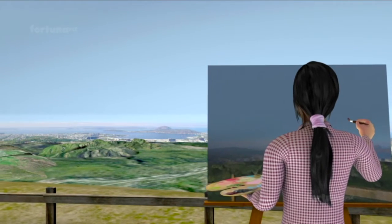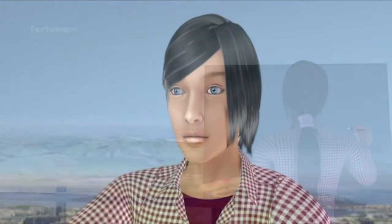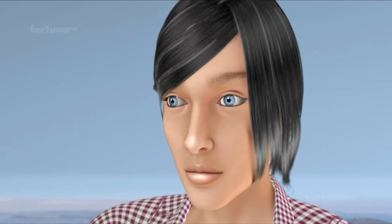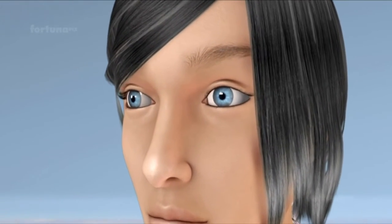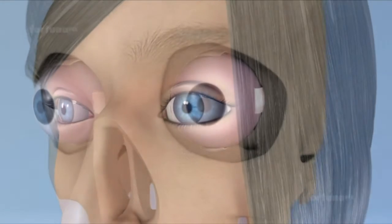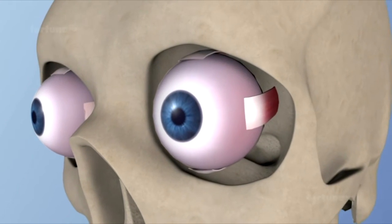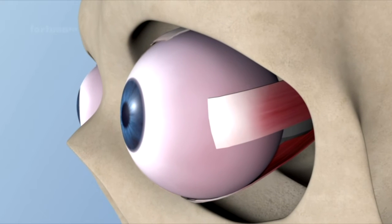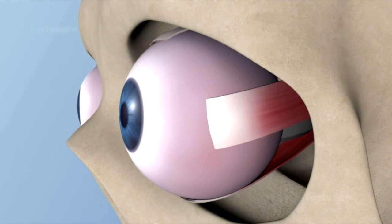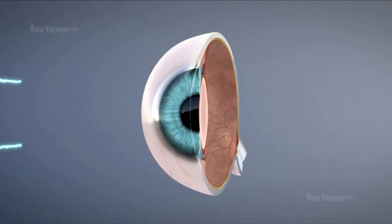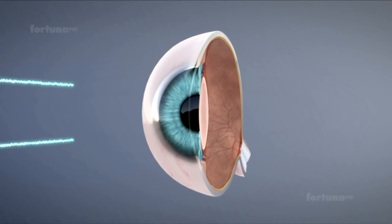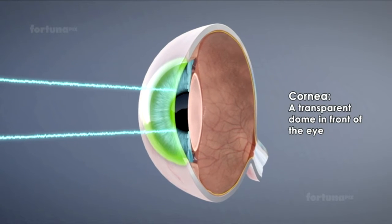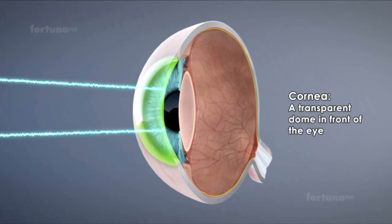The eye is an organ of vision, and it makes accommodations allowing you to see objects clearly at varying distances. Before we look at those accommodations, we first need a basic understanding of how the eye works. Light waves from an object will enter the eye through the cornea, a transparent dome covering the front of the eye.